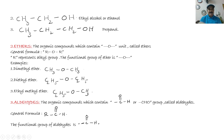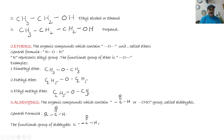An example is dimethyl ether: one methyl group on one side, another methyl group on the other side, with oxygen in the middle. Since there are two methyl groups, we use the prefix 'di', so the name is dimethyl ether. Another example has two ethyl groups giving diethyl ether. A third example has ethyl on one side and methyl on the other, so its name is ethyl methyl ether.